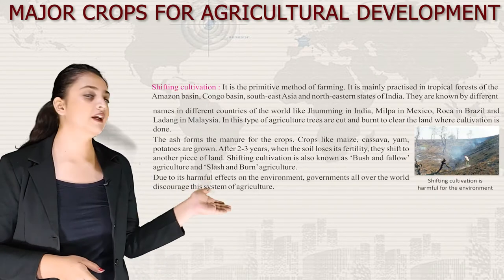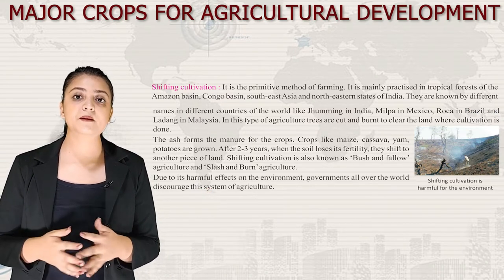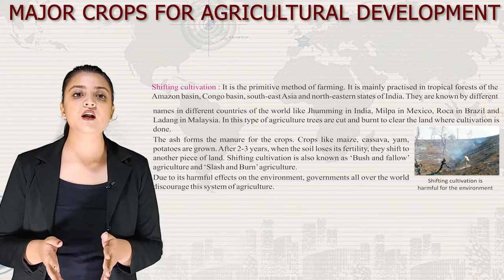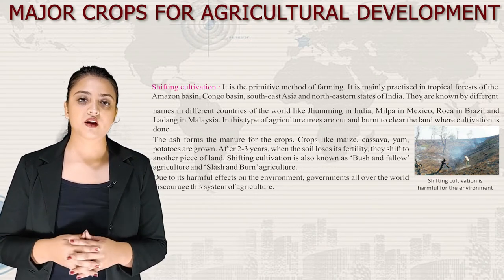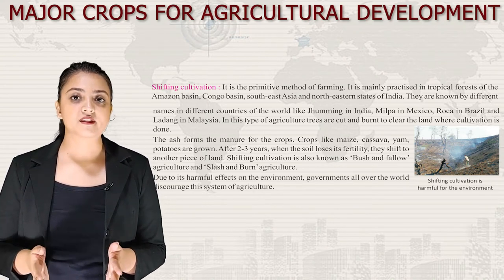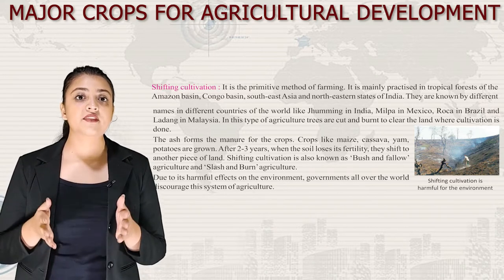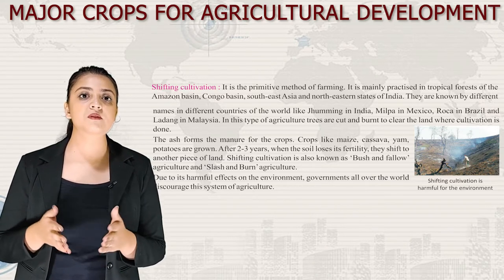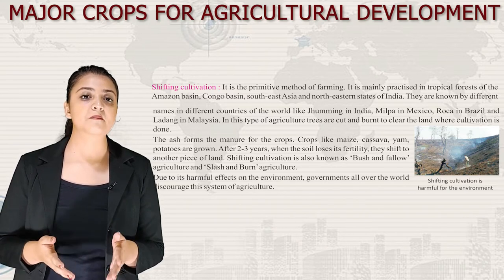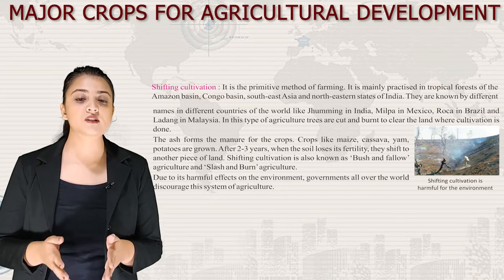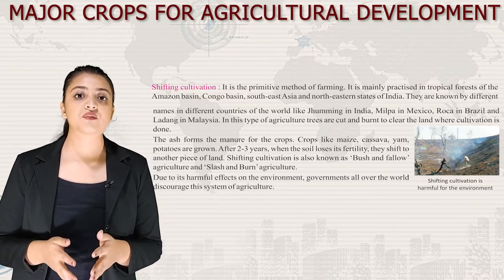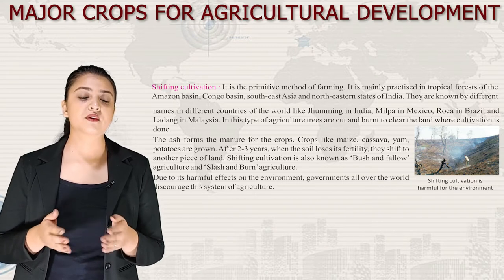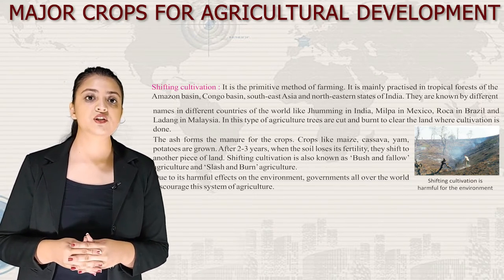First is shifting cultivation, a primitive method of farming mainly practiced in tropical forests of the Amazon basin, Congo basin, Southeast Asia and Northeastern states of India. It is known by different names: Jhum in India, Milpa in Mexico, Roca in Brazil and Ladang in Malaysia. Trees are cut and burned to clear the land; the ash forms manure for crops like maize, cassava, yam and potatoes. After 2–3 years, when the soil loses its fertility, they shift to another piece of land. It is also known as slash and burn agriculture, and governments worldwide discourage it due to its harmful environmental effects.